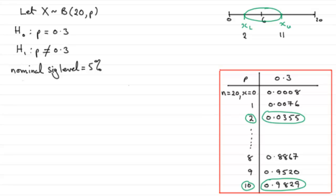Now, for this next part, we need to state the actual significance of this test. What we had before was the nominal significance level, which was 5%. But to work out